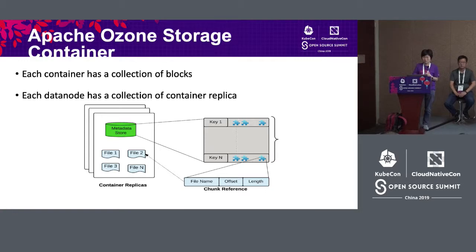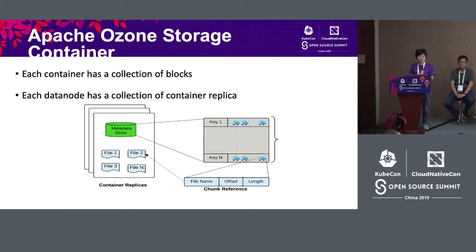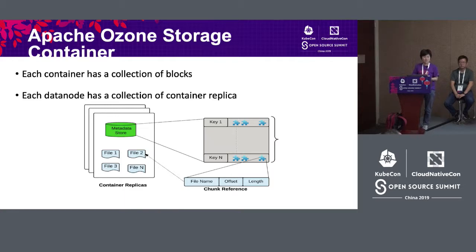The default container size is 5 GB, and it can support up to 16 GB. With this new component, the original file-to-block relationship has an additional layer: object to container, and container to block. Each container can maintain its own block information. So all the metadata does not need to be concentrated in the Ozone Manager's internal memory. This makes the system very unique and easy to scale.